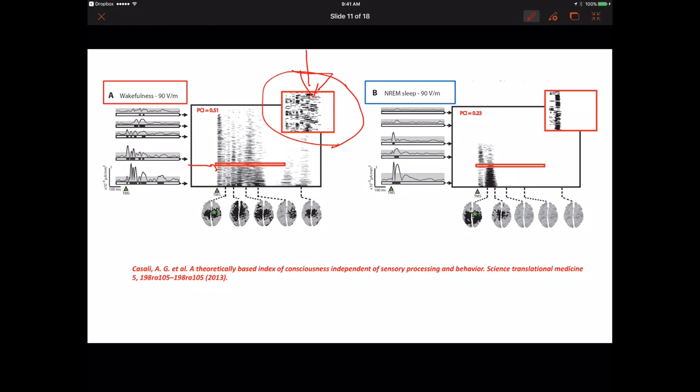The algorithm will have more work to do to compress this data to reduce the inherent complexity. If you do the same thing in non-REM sleep, i.e. in a non-conscious state, you see the signal is dramatically reduced and the complexity, of course, is significantly reduced as well, yielding a smaller number for the PCI.